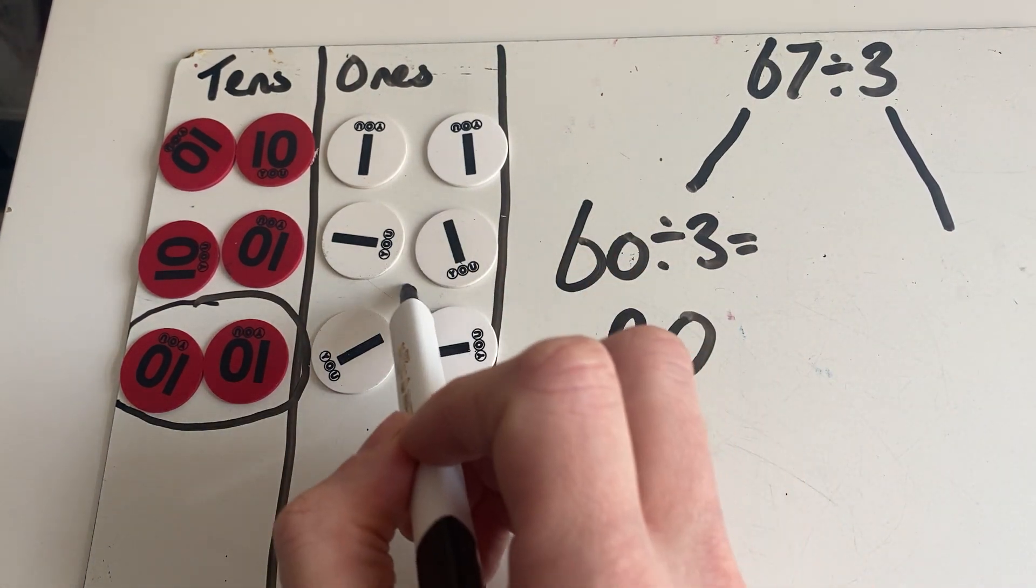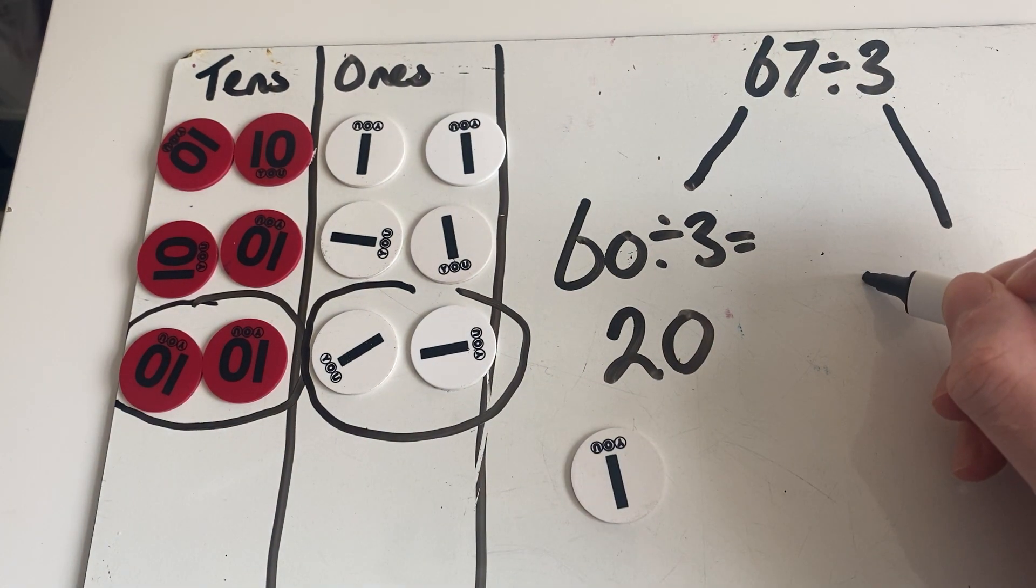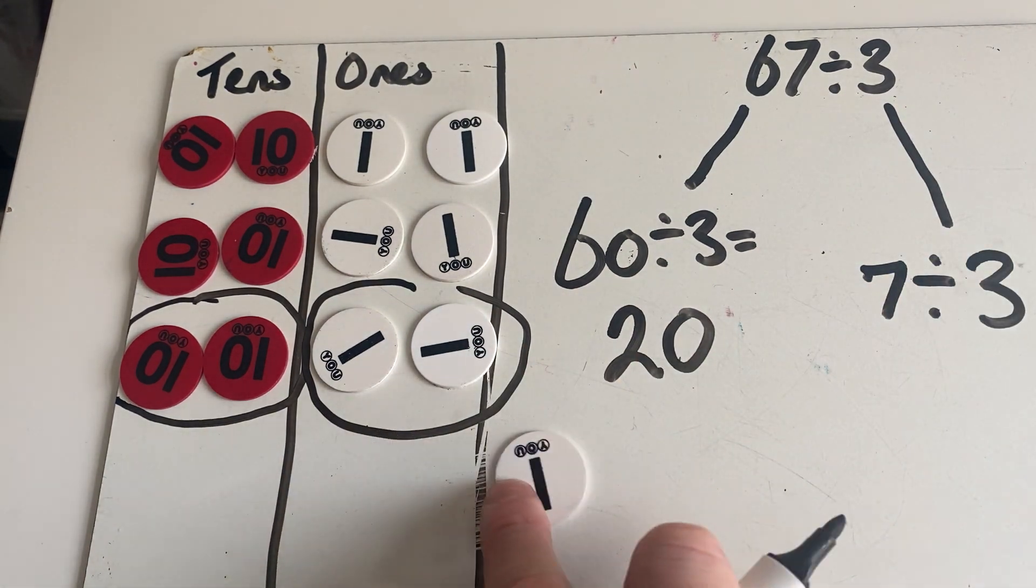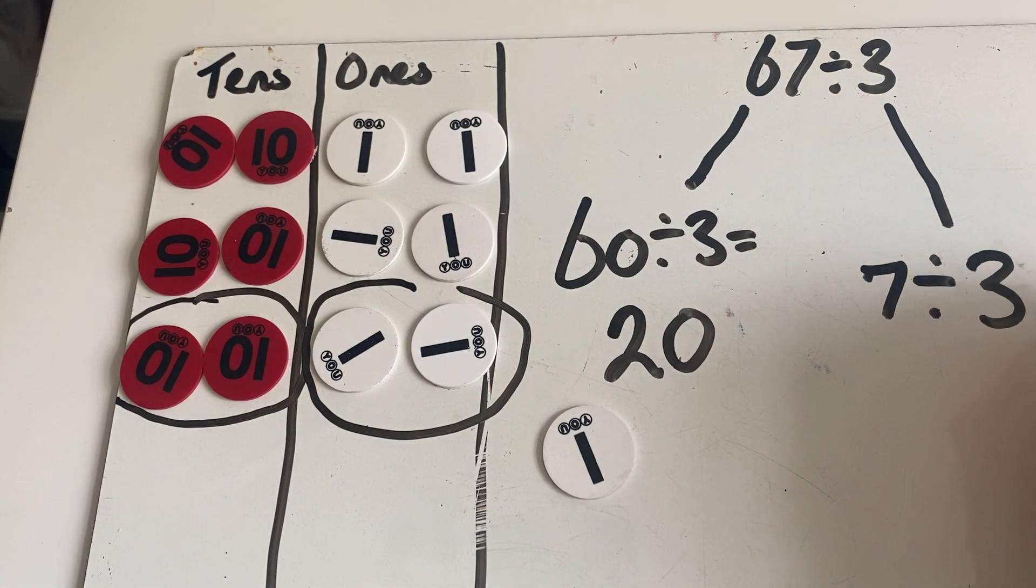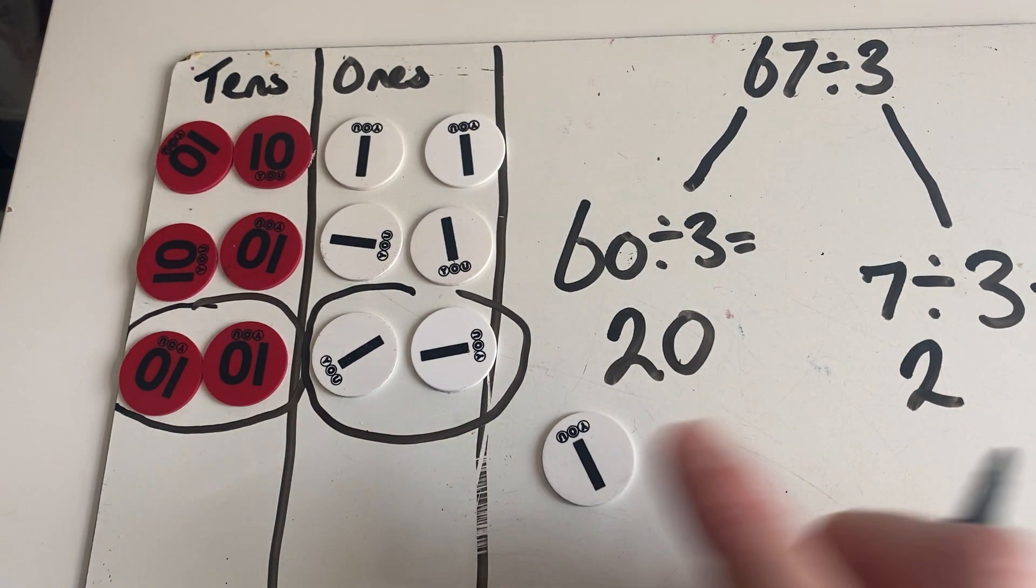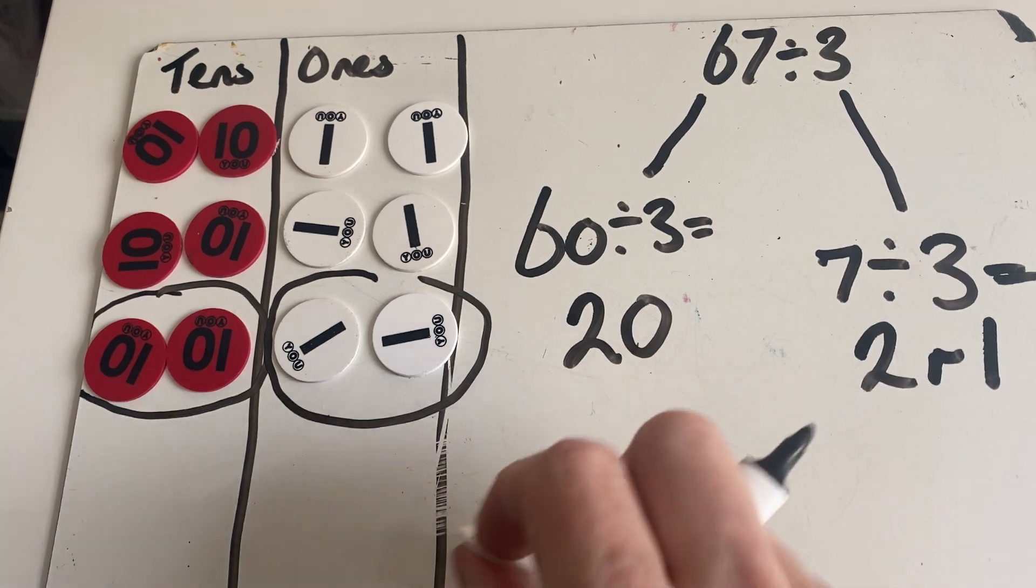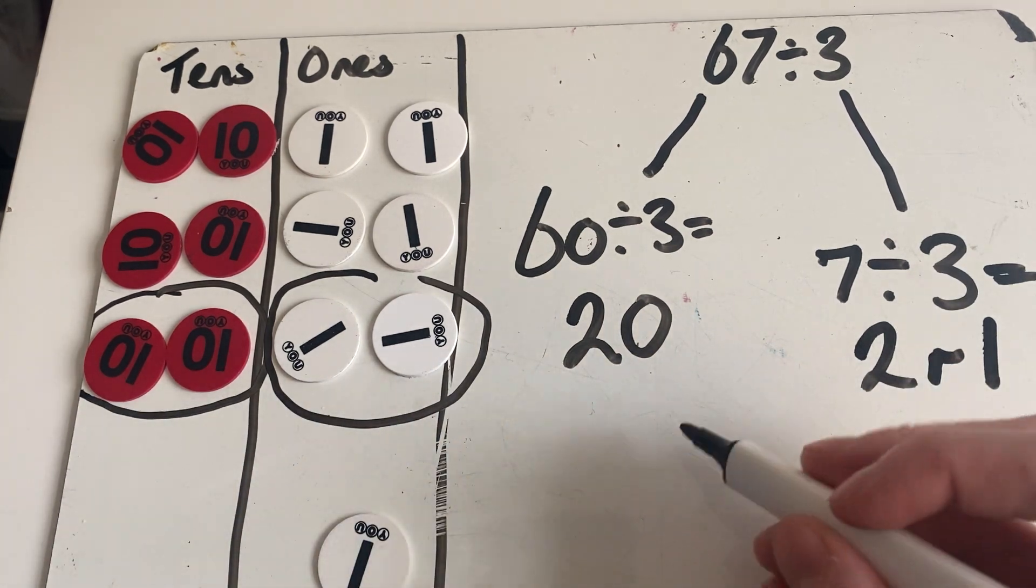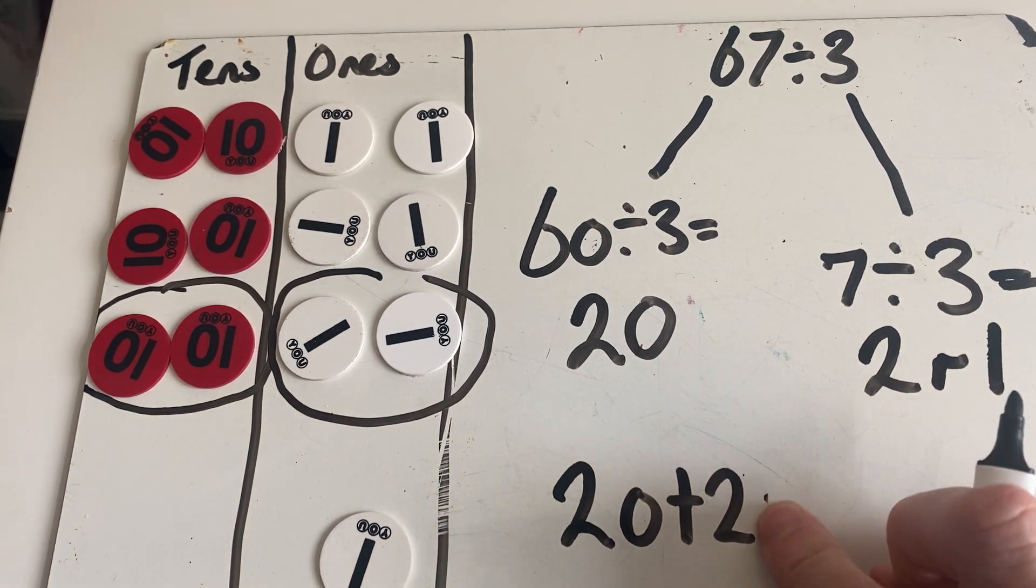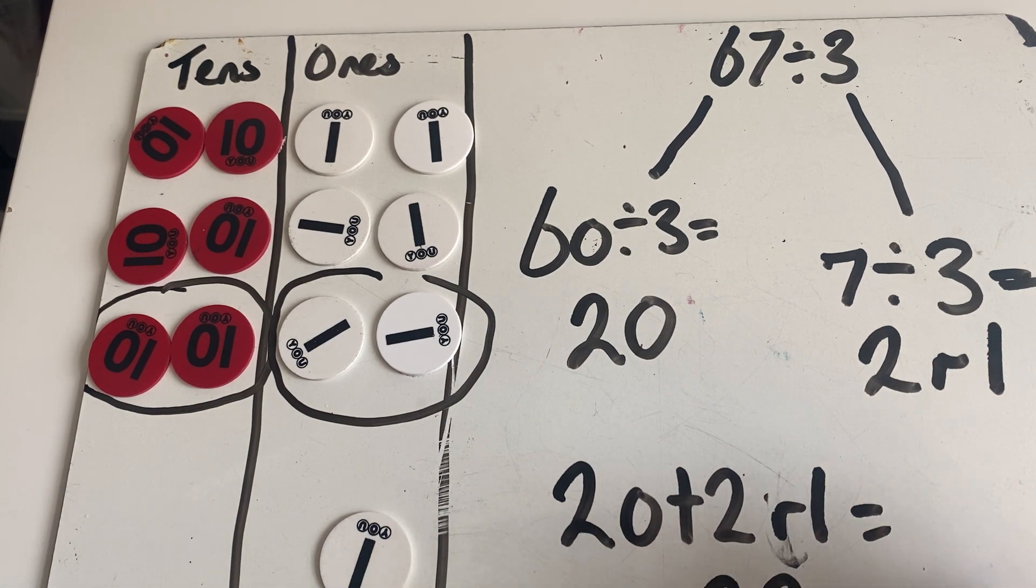In each group here we've got two. So we know that seven divided by three - because we had seven ones - equals two. But because we've got one remaining, we have to put a little r and then put one. We can combine these together: 20 plus 2 remainder 1 equals 22 remainder 1.